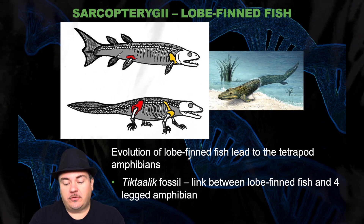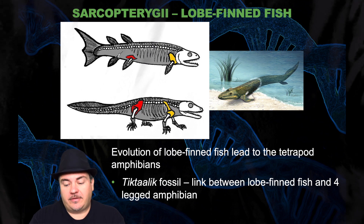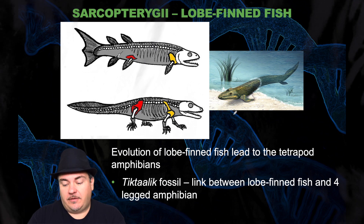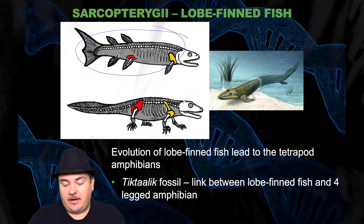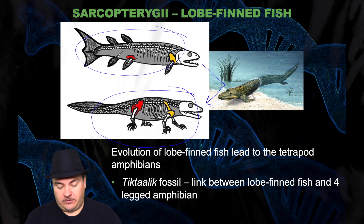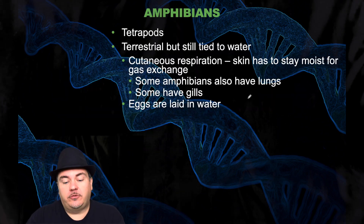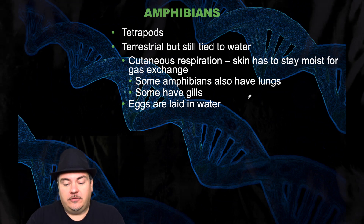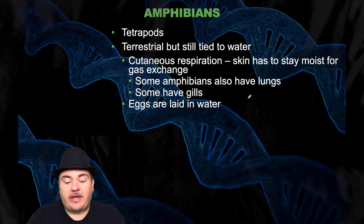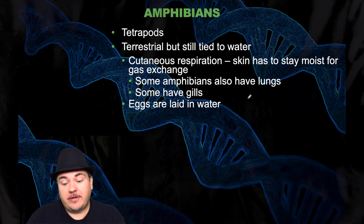The evolution of lobe-finned fish led to the tetrapod amphibians, so the lobe-finned fish would be the ancestor of the amphibians. In fact, there's an ancestor called Tiktaalik — it was found as the evolutionary link between the lobe-finned fishes and the four-legged amphibians. So then you have the amphibians, which are tetrapods with four limbs. They live on land but they're still tied to water. Their skin has to stay moist because they do gas exchange through their skin. Some amphibians also have lungs and some have gills.